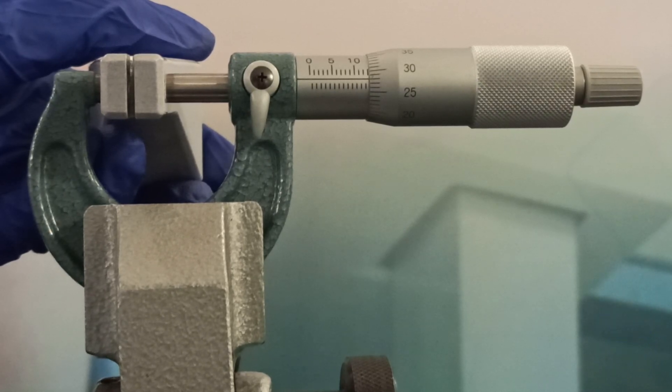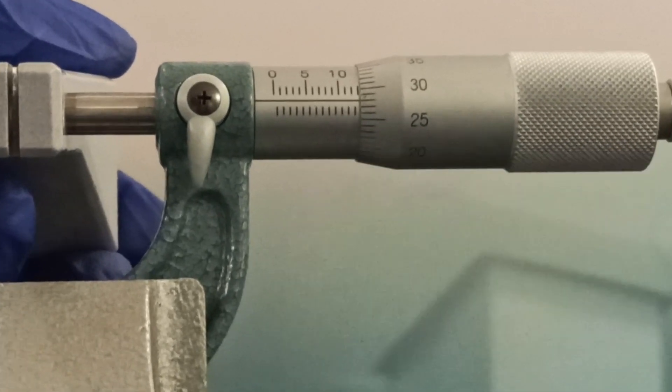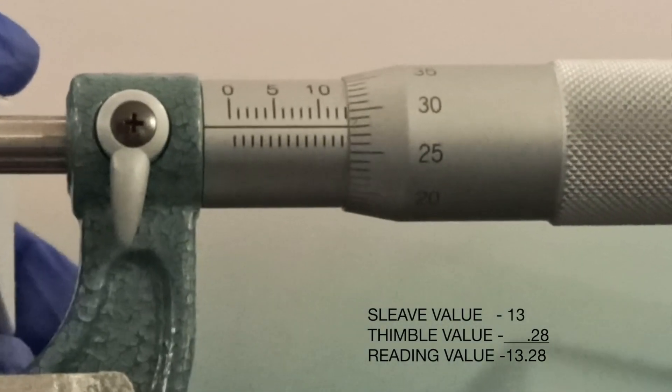The main scale reading is 13 mm and the value of the thimble is 0.28 mm. Hence the value of the component is 13.28 mm.